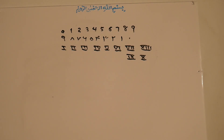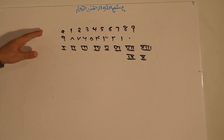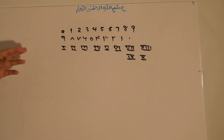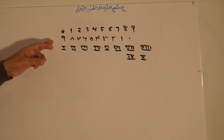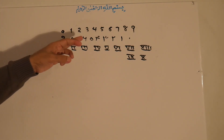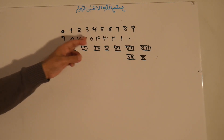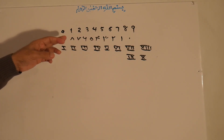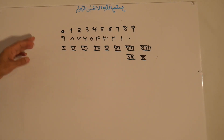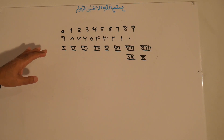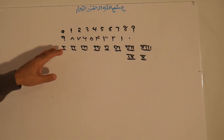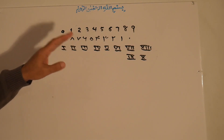In different languages, they have different representations. For example, in English language, the numbers are one through nine. In Persian, Farsi, or Arabic, there are also different symbols for zero through nine. And in ancient Roman numerals, one, two, three, four, and so on.